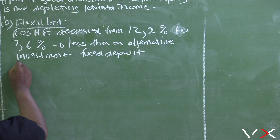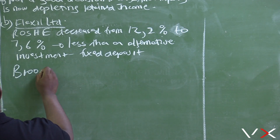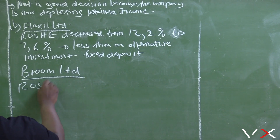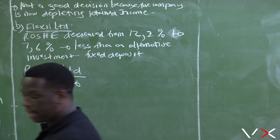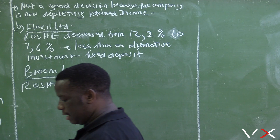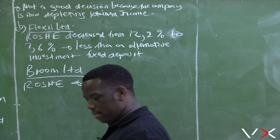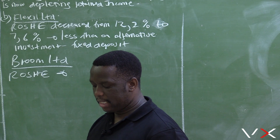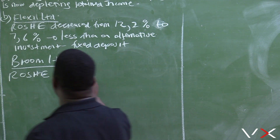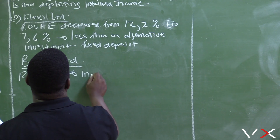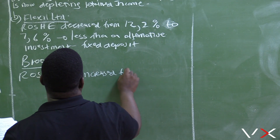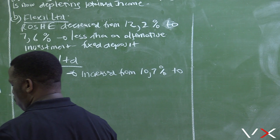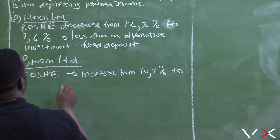Now let's look at Broom Ltd. The percentage return on average shareholders equity — ROSHE — for Broom Ltd has increased from 10.7 percent to 14.1 percent.